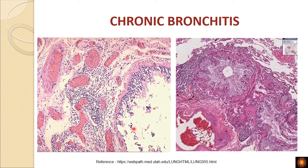In microscopic photographs, the ciliated epithelium is shed off, revealing a thickened basement membrane and sub-epithelial edematous tissue with chronic inflammatory cells — lymphocytes and plasma cells — alongside congested blood vessels. Small airways are seen completely filled with mucus plugs, with the blue-staining mucin blocking the lumen entirely.